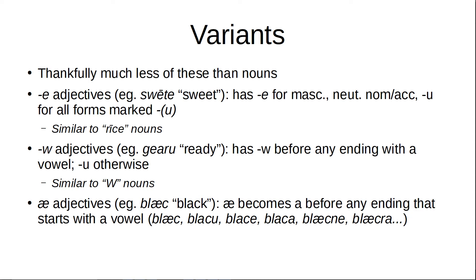There are some variants — thankfully much less of this than in nouns. There are basically three different variants to look out for. There are e-adjectives, such as suete, which means 'sweet.' In the masculine and neuter nominative/accusative, it has an e on the end, which makes it pretty easy to see because that's usually the form listed in the dictionary. For the feminine nominative singular and neuter nominative/accusative plural — those forms marked nothing or -oo — it has the -oo. This is similar to nouns like ríče. Very similarly, we have w-adjectives, like yáru, which has a w before any ending with a vowel — similar to the w-nouns like báru, bárues, etc.